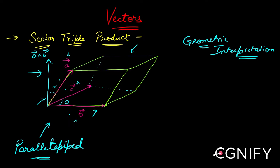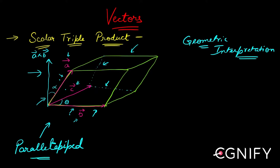Because if this vector is b-bar, then this vector in that direction will also be b-bar. The other edges are just repeated, so ultimately we have three unique vectors which form this entire parallelepiped. Now let's look at the box product of a, b, c.